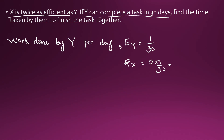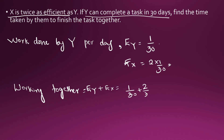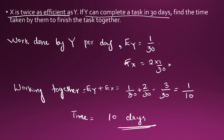To find the time taken by them to finish the task together, their efficiencies are added: efficiency of Y plus efficiency of X equals 1 by 30 plus 2 by 30, which is 3 by 30 or 1 by 10. So the time taken is the reciprocal of efficiency, which is 10 days.